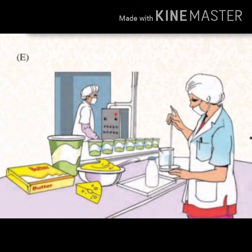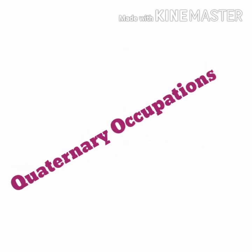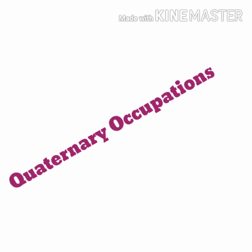Now look at picture E. Here you can see a person testing the prepared milk products — testing the quality of the products. To do this work, the person must have some special skills. This is also a type of service, but not an ordinary one. It requires special expertise, and therefore such services are called quaternary occupations.